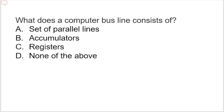Next question: what does a computer bus line consist of? The correct option is a set of parallel lines, one for each bit of a register, through which binary information is transferred. A control signal determines which register is selected by the bus during a particular register transfer.